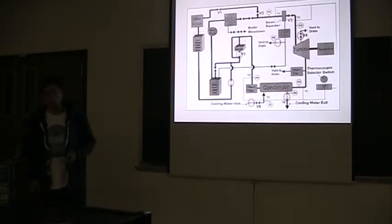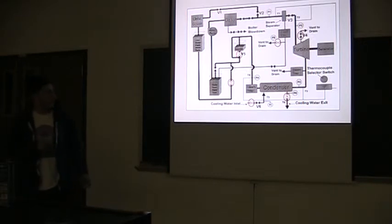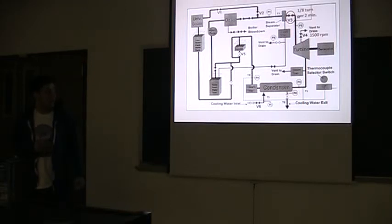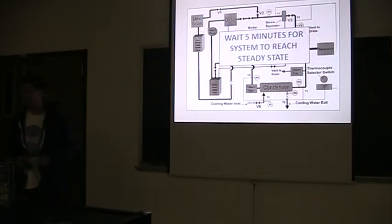For the procedure, first we'll open all the valves. We need all the valves closed except for valve 4. We'll open up V2 and slowly open valve 1 until we get 100 psi on the first pressure gauge. Then we'll slowly start to open V3 until we get the turbine at 1000 RPM for it to warm up. And then we'll open an eighth of the turbine every 2 minutes until we get to 3500 RPM. And we'll wait 5 minutes for steady state.